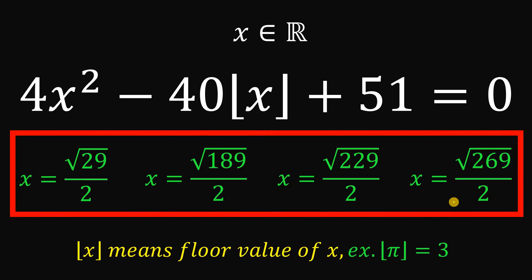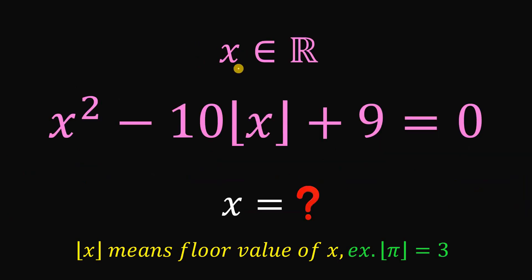But before we end this video, using this concept, I want you to answer this question: given that x is a real number that satisfies x squared minus 10 times the floor value of x plus 9 equals 0, find all real values of x that satisfy this equation. I hope you learned something new today, and see you in the next one.